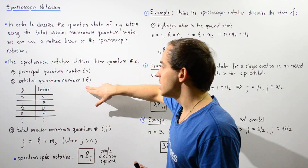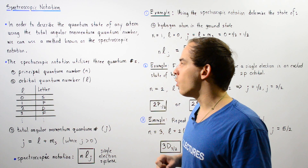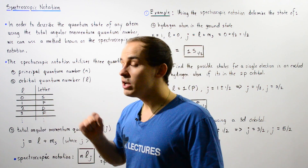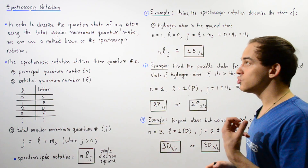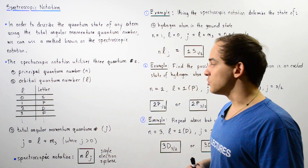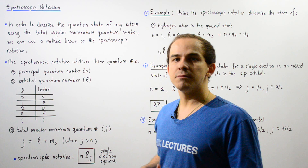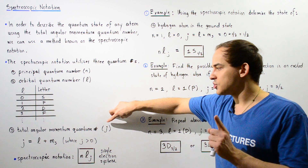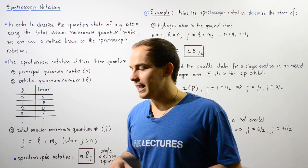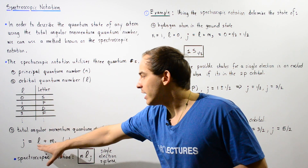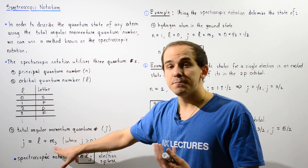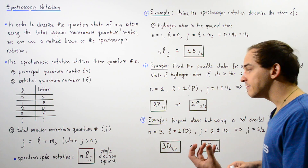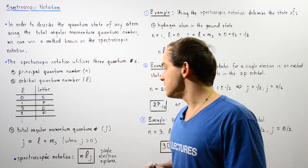So basically, instead of using the numerical value for the orbital quantum number, we use the letter, and the letter is capitalized. The third and final quantum number we must use in spectroscopic notation is the total angular momentum quantum number given by lowercase j. In the previous lecture, we said that j can be calculated using the orbital quantum number l as well as the spin quantum number ms.